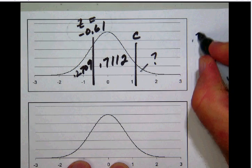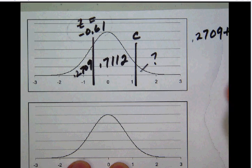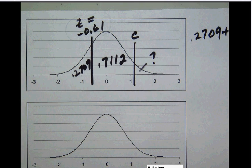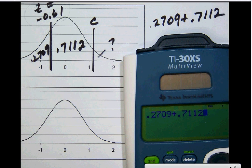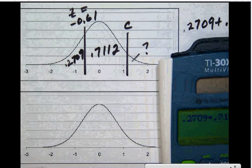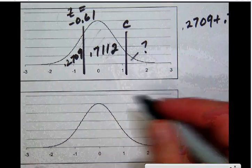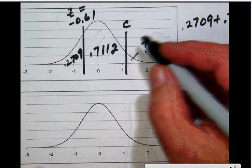So what we can simply do there is to add those areas. So if we add 0.2709 plus 0.7112, we will get 0.9821. Now that 0.9821, remember, is the sum of these two areas. That's all of this area put together, which is now 0.9821.